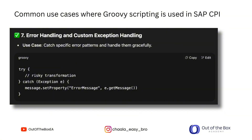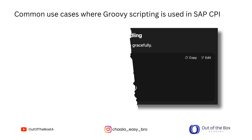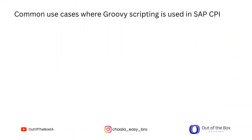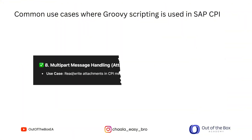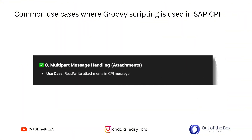Seventh, error handling. This is one of the main use cases where we can use Groovy scripting to handle exceptions gracefully using try-catch blocks. You can capture error messages and route them to alternative error handling workflows.